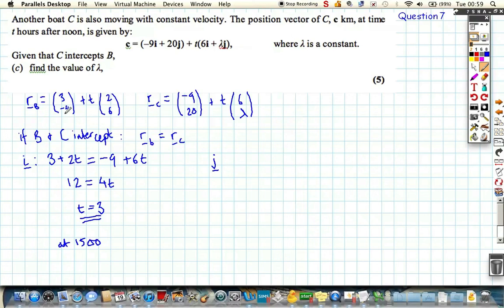Now, if we look at the J components, so we can just read along the bottom of our vectors now, we've got minus 4 plus 6t is equal to 20 plus lambda t, but we know that t must be 3, because 3 o'clock is the time in which they crash into each other or they intercept, they're occupying the same position, so we can say that minus 4 plus 18 is equal to 20 plus 3 lambda. Now, we can rearrange all this, which makes 14, and then taking away 20 gives us minus 6 is equal to 3 lambda, so lambda must be minus 2, so that's found the value of lambda.